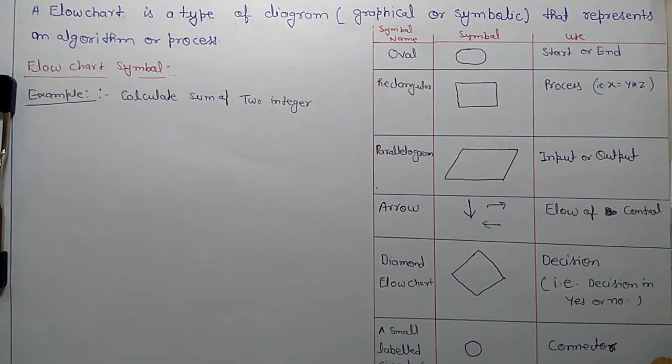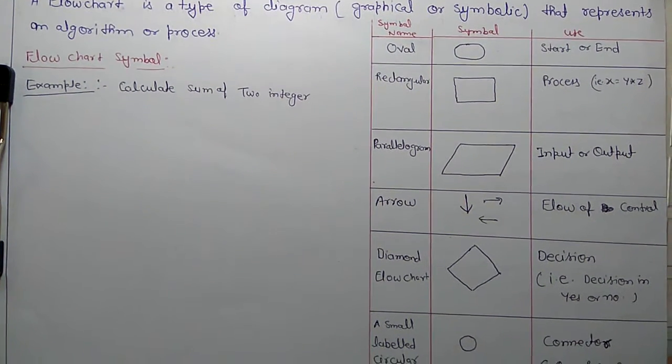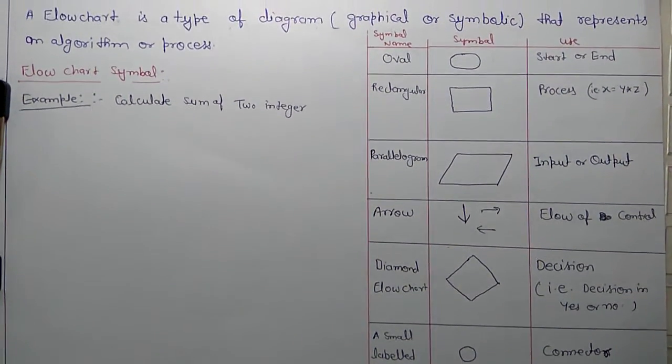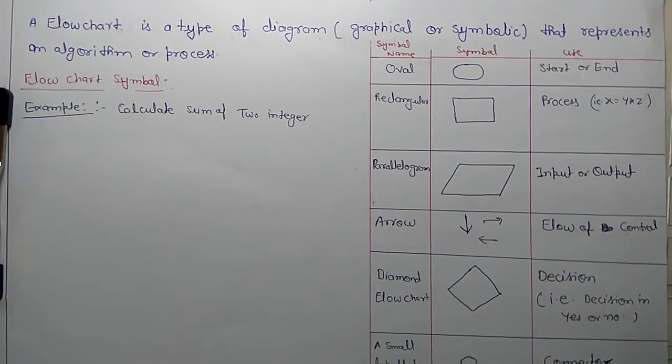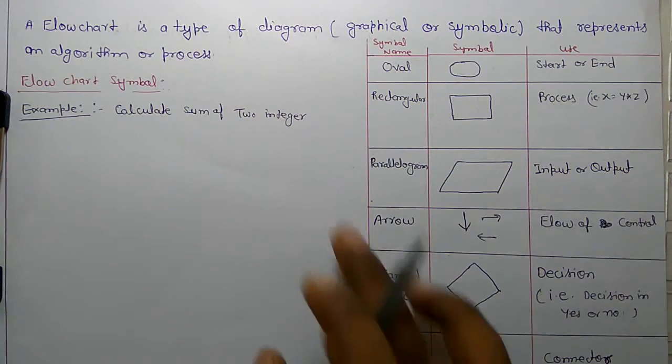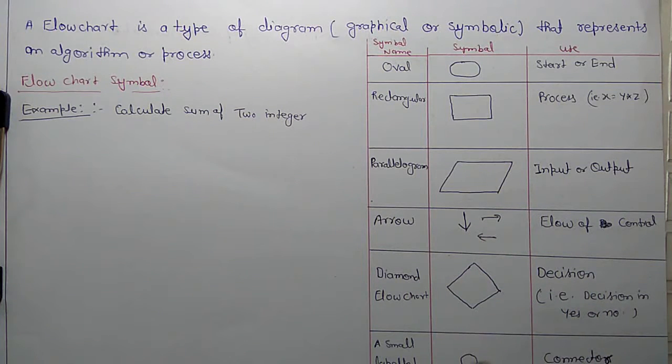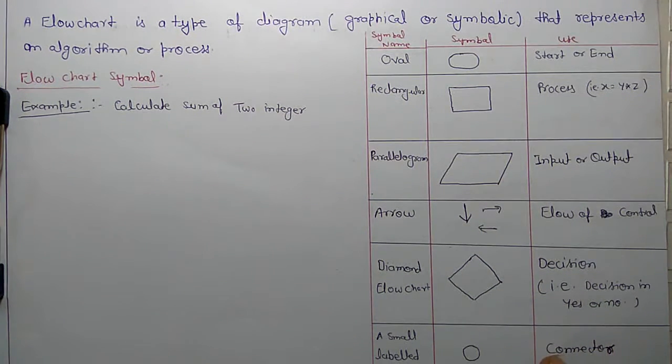And the next is connector. The small level connector, circular symbol, is used as connector. If some flowchart you have drawn on first page and you want to connect to another page, for that you use connector, that is small circle.